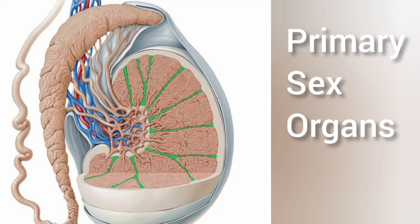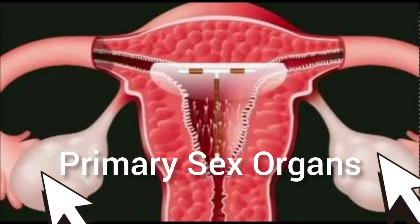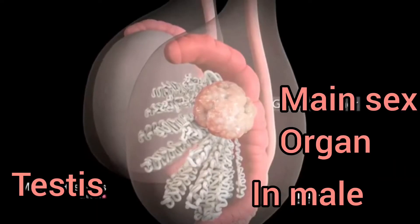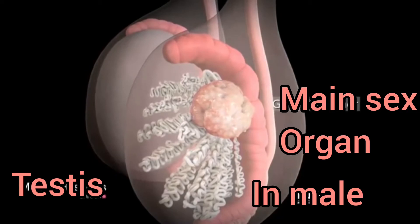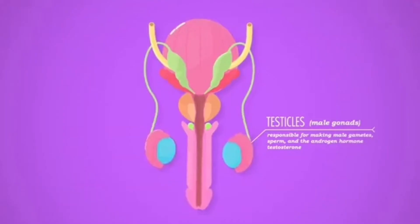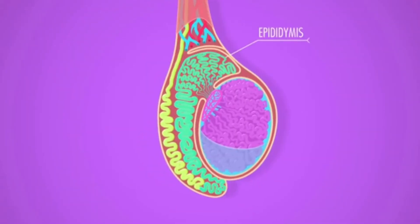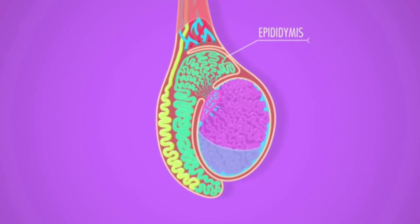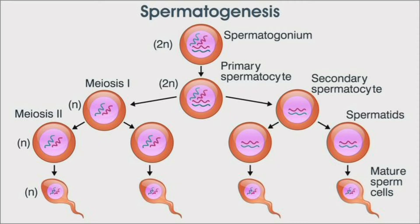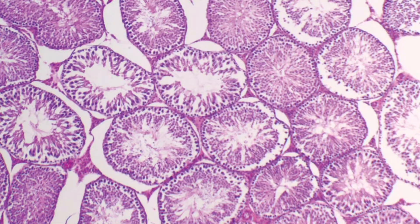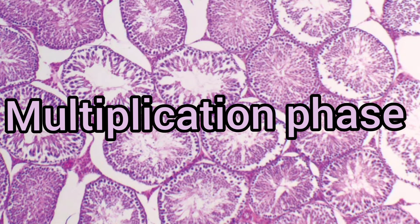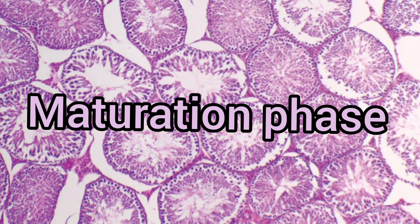Both of these organs are primary sex organs. The testis are primary male sex organs; a pair of testis are present in the scrotum, lying outside the abdomen. Sperms in the male body are formed by the process of spermatogenesis. In the testis there are four main phases of spermatogenesis: the multiplication phase, growth phase, maturation phase, and differentiation phase.